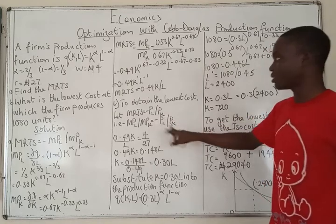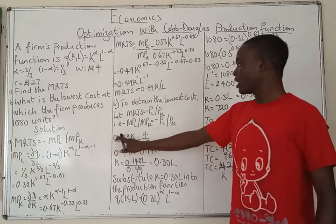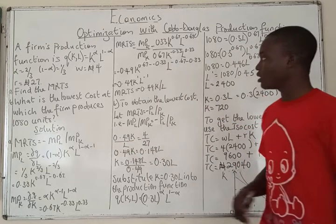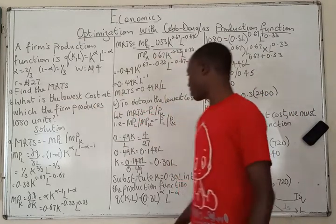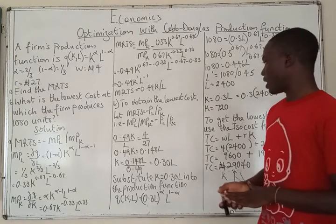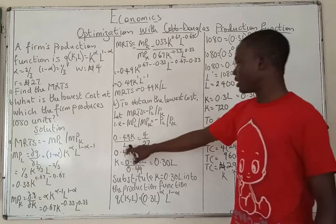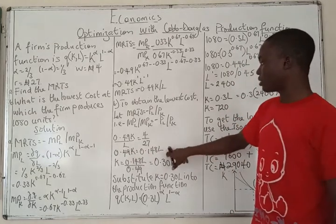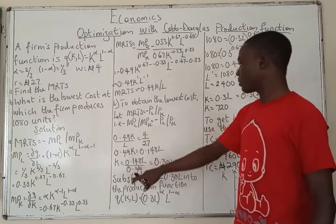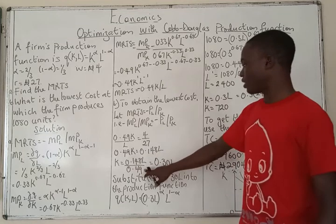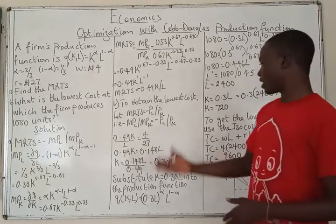The minus signs cancel, so we have 0.49K/L equals W/R = 4/27 ≈ 0.148. Cross-multiplying, 0.49K equals 0.148L. Dividing through by 0.49, we get K equals 0.148L / 0.49, which gives us approximately K = 0.3L.